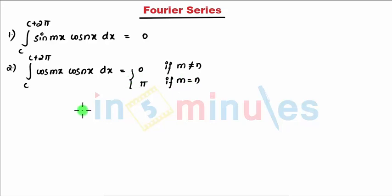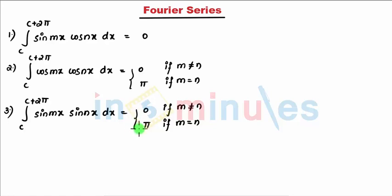Next is third: C to C plus 2π, integral of sin(mx) times sin(nx) dx equals zero if m is not equal to n. If m equals n, you get π. These are the formulas which are proved by using sin(a)cos(b), cos(a)cos(b), and sin(a)sin(b) formulas. This first one is zero for all m, n.